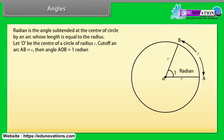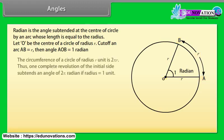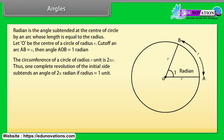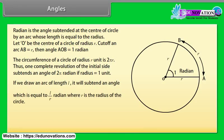How to measure radians? A radian is the angle subtended at the center of a circle by an arc whose length is equal to the radius. Let O be the center of a circle of radius R. Cut off an arc AB equal to R; then angle AOB equals 1 radian. The circumference of a circle of radius R is 2πR, so one complete revolution equals 2π radians. If we draw an arc of length L, it subtends an angle L/R radians, where R is the radius, and we can write L = R·θ.